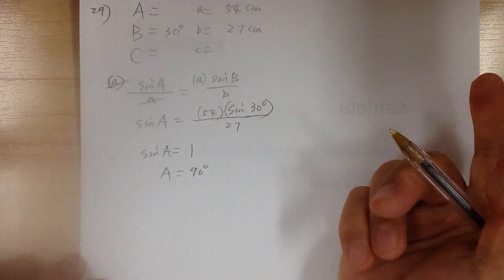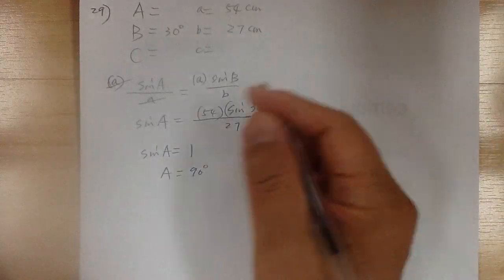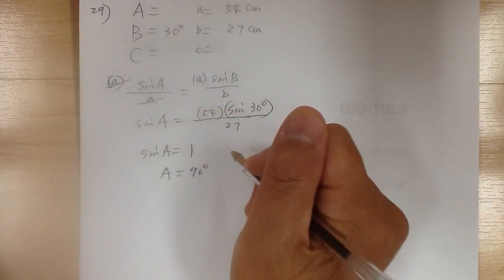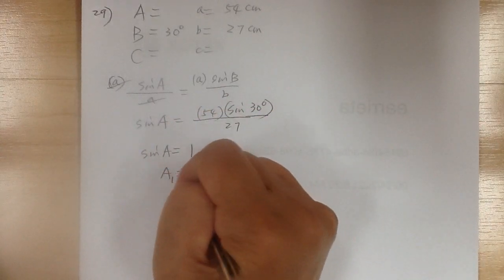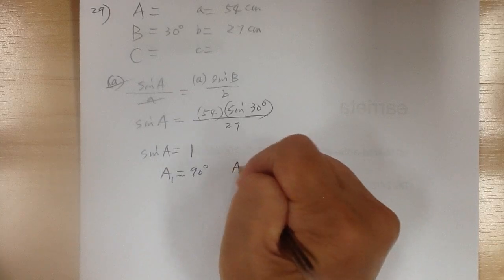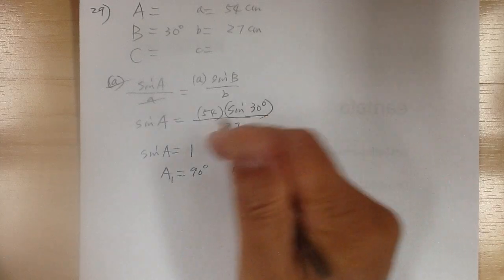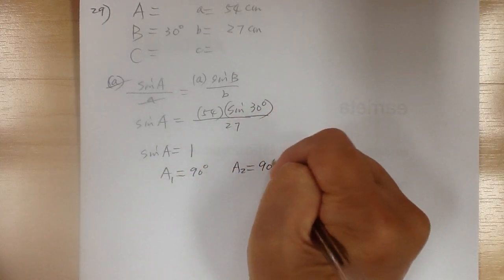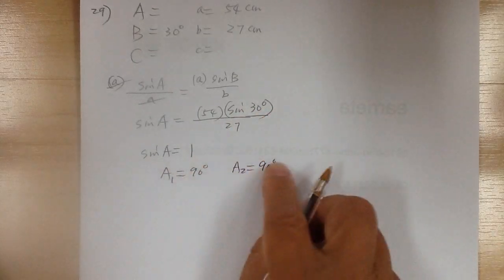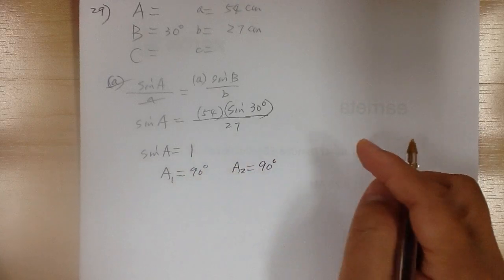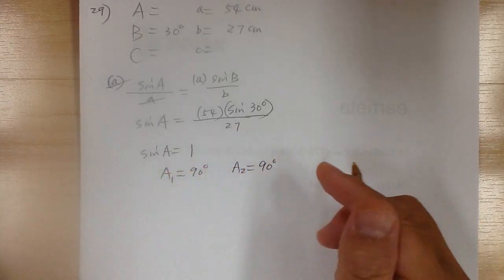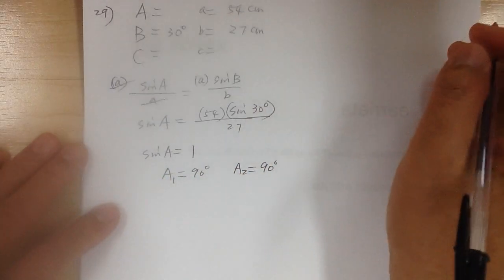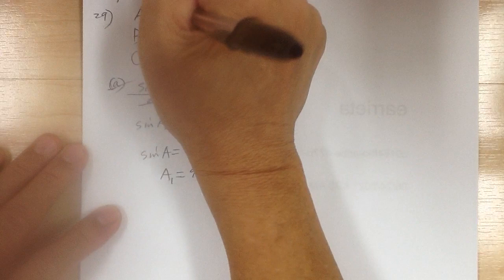Now remember, whenever you use the law of sines to find an angle, you have to get your second possibility. So A1 equals 90, and A2 is 180 minus 90, which still gives you 90. So you've got two identical triangles, so this one has only one case — just equal to 90 degrees.